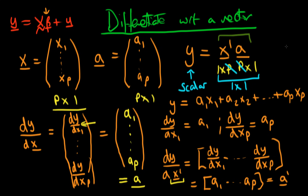Notice this isn't as immediately obvious as the first case. When differentiating y with respect to x transpose, one might naively expect to just get a. But that thought process is misleading because the output must have the same dimensions as the thing we're differentiating with respect to. Since x transpose is 1 by p, the answer is not a but a transpose.